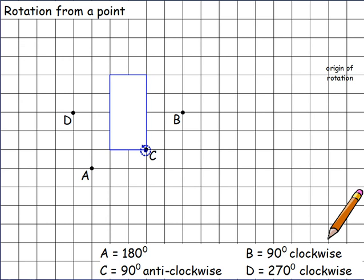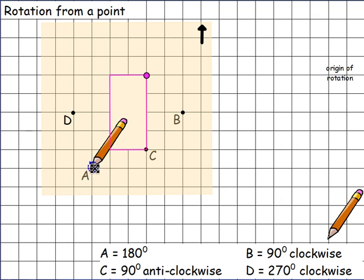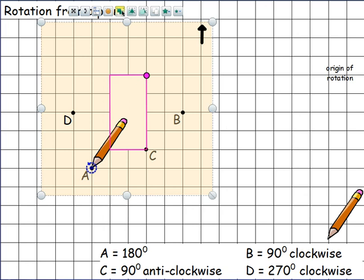Next we're looking at rotation from a point. There's a simple rectangle here. Again you'll need tracing paper with an arrow on it facing north. Make sure the tracing paper covers the shape as well as the centres of rotation — the coordinates marked on your question. Trace the shape, then place your pencil on the point where you're rotating and hold the tracing paper down at this point using the nib of your pencil.